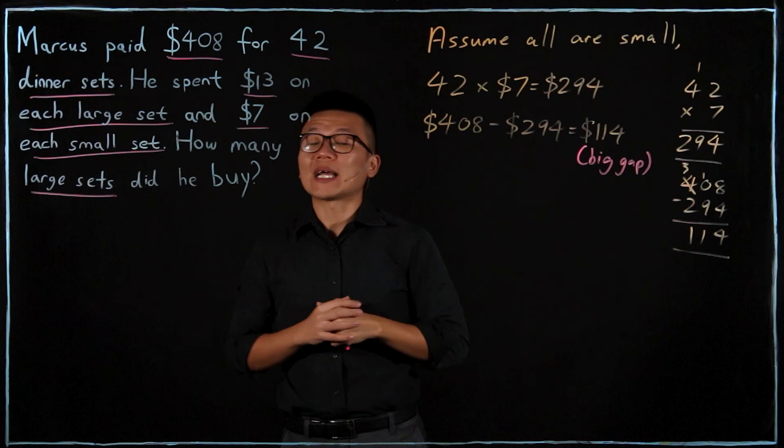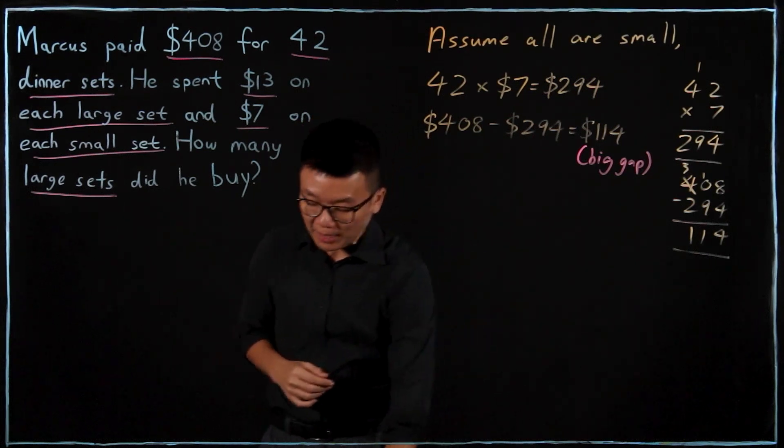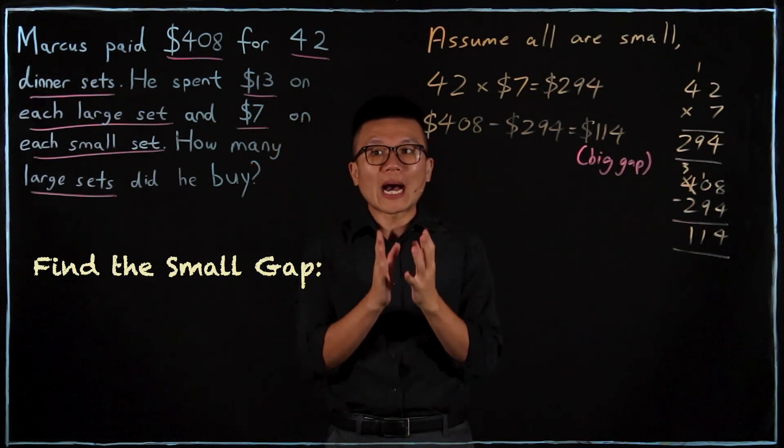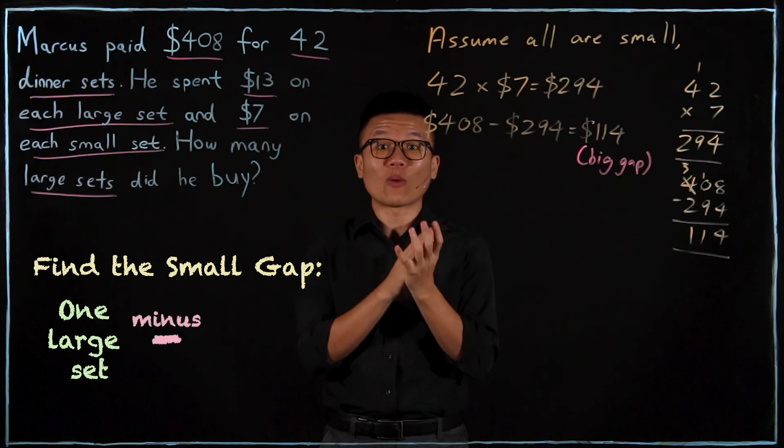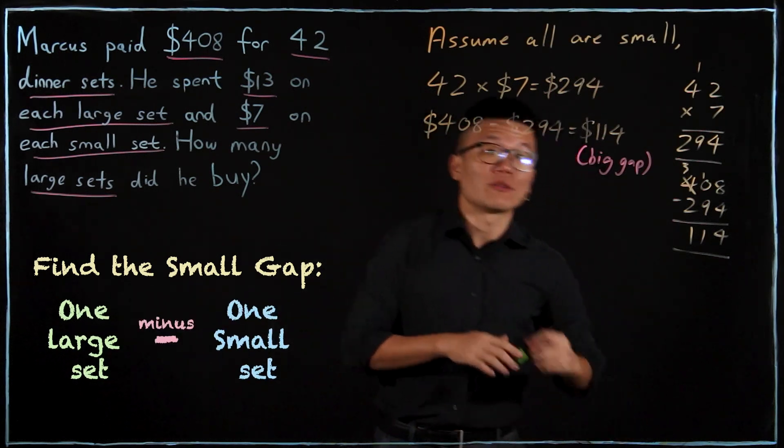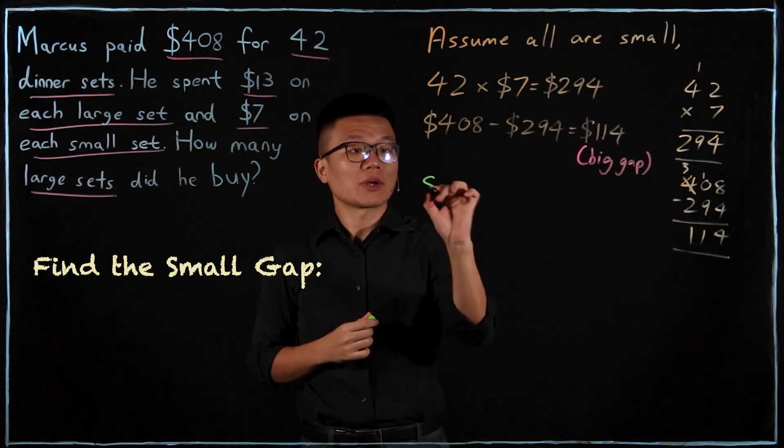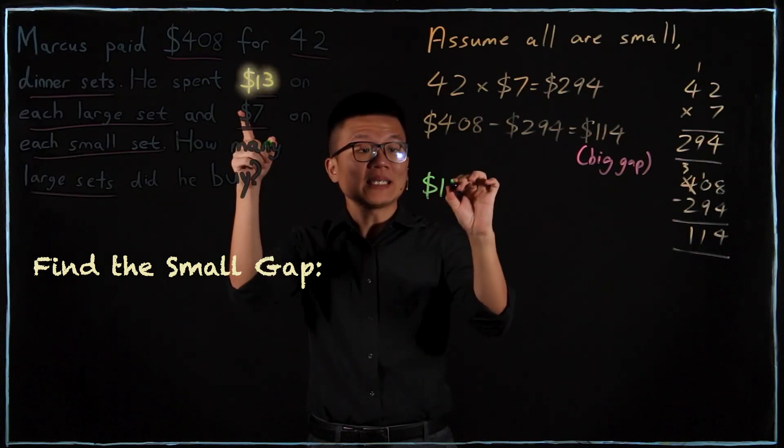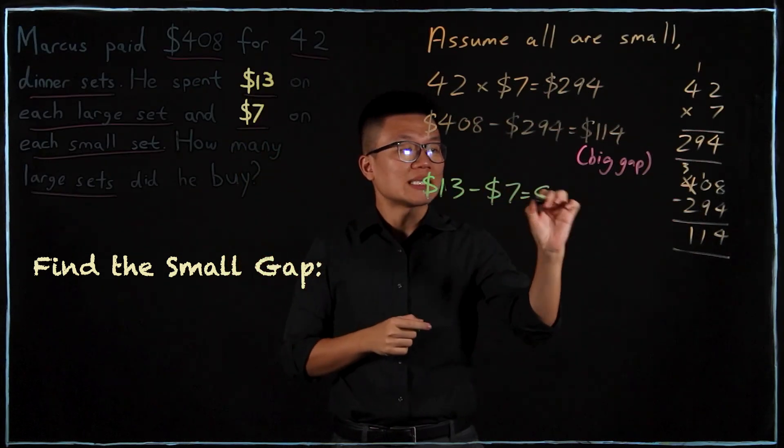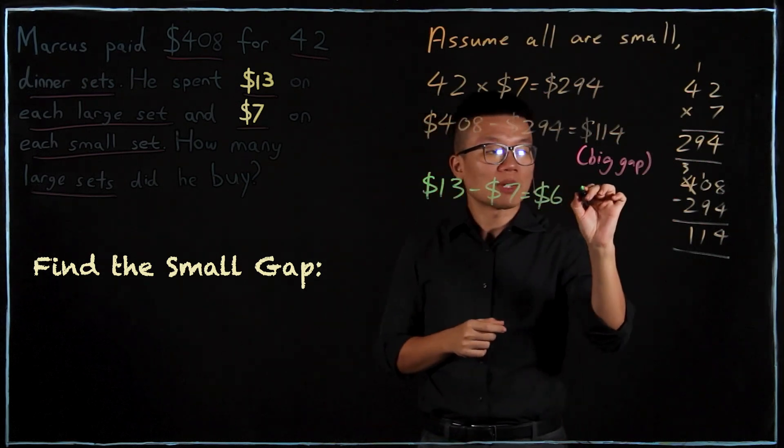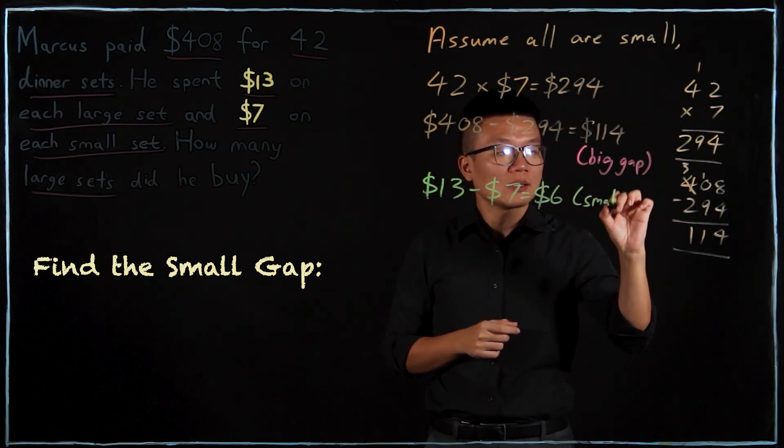Now I have to find the small gap next. The small gap will be the difference between one big and one small. So I'll find small gap. One big is $13, one small is $7, equals to $6. So this is what I call the small gap.